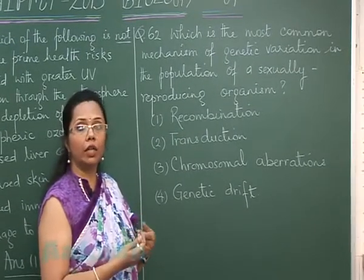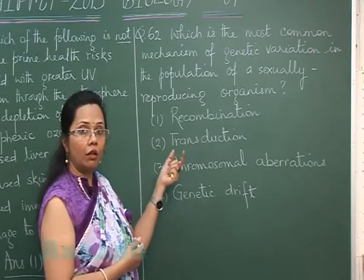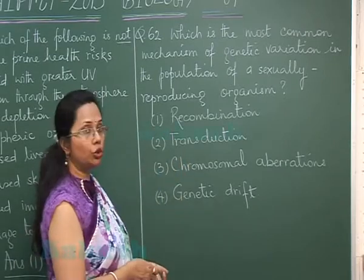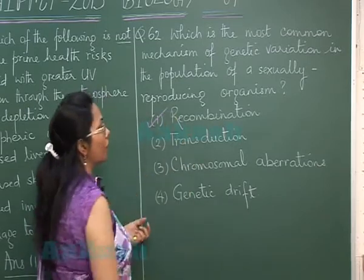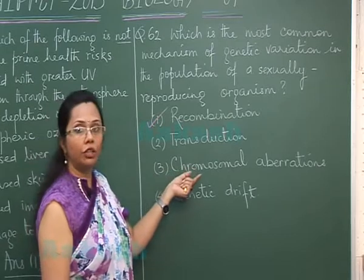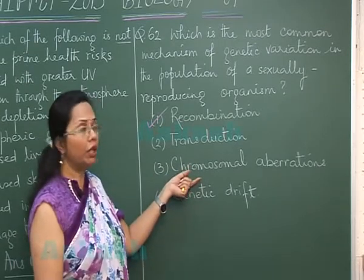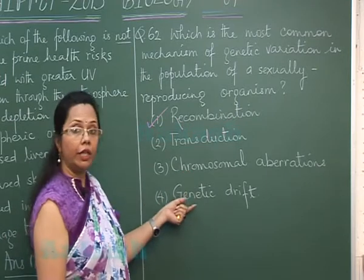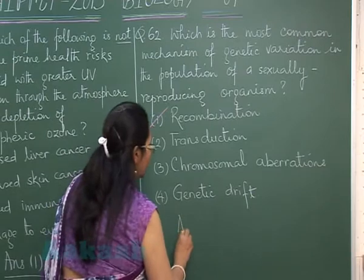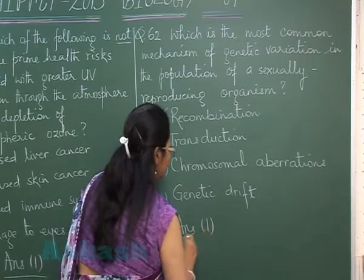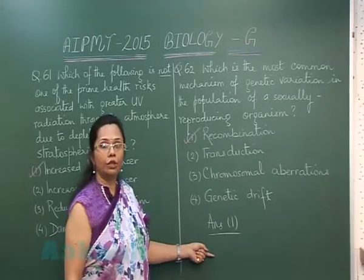This reshuffling results in continuous variation, while mutations are rare. Chromosomal aberrations are a form of mutation, but many could be lethal, and genetic drift would be reducing variation. So the best answer is recombination — option one. Let's move on to question 63.